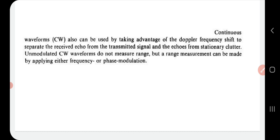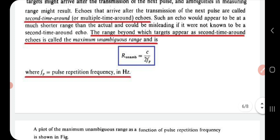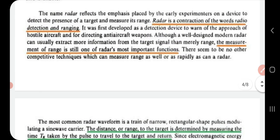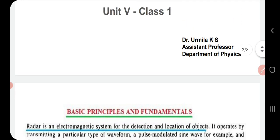So we have covered the basic fundamentals: what radar is, how the vision of radar differs from human vision, how radar operates, the definition of range, pulse compression, second-time-around echoes, and maximum unambiguous range. In the next class we will learn about the working principle, the block diagram of radar, its components and their functions, applications of radar, and the various types of radar.